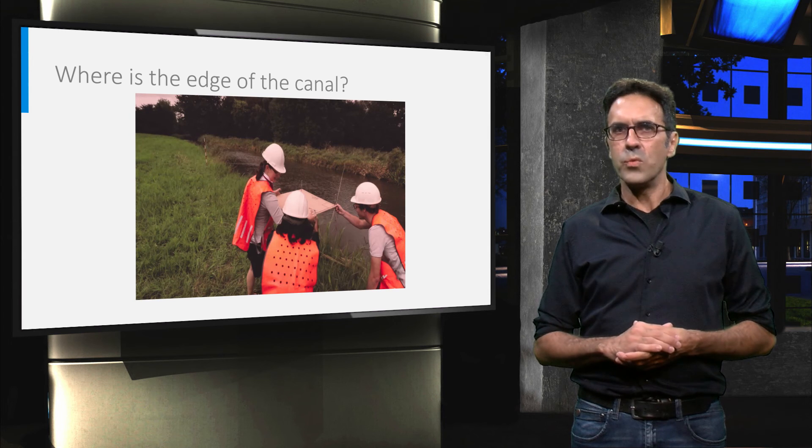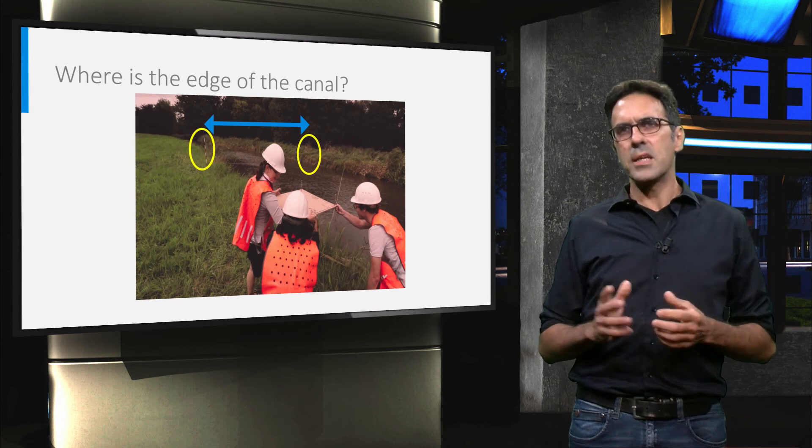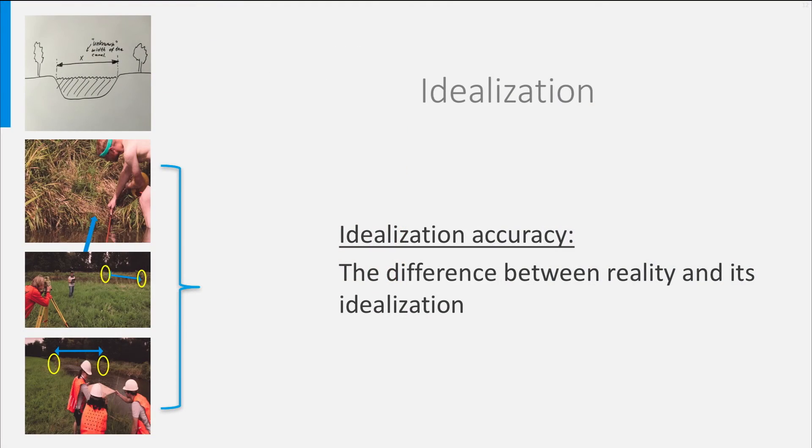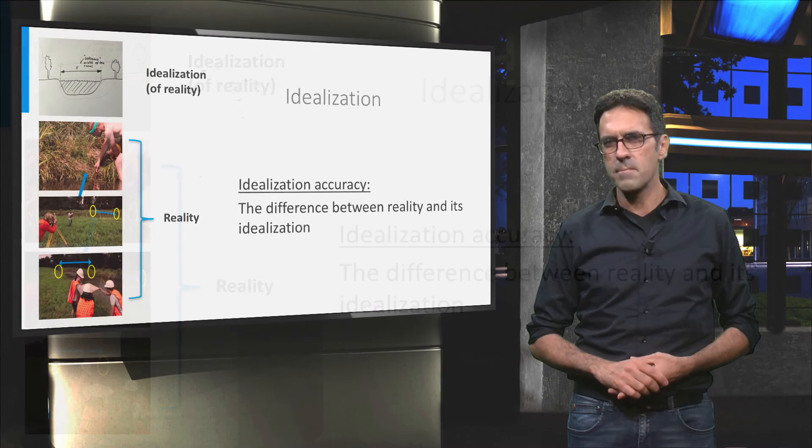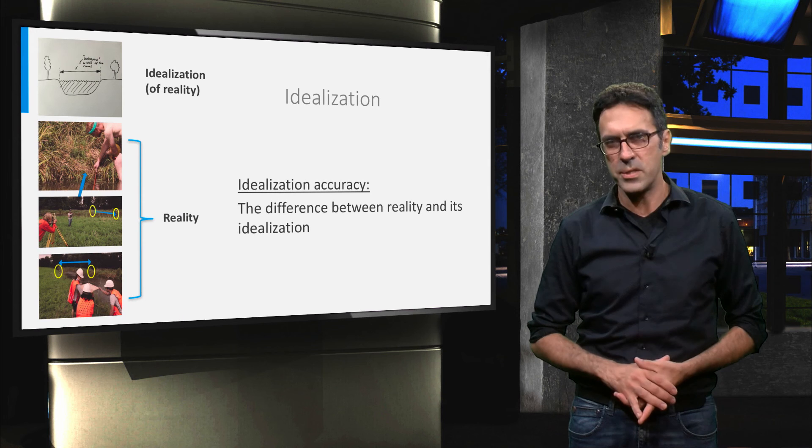The same problem would hold for the team applying the Boy Scout method. It is clear that the rod is not really at the land-water interface. We now know that real life measurements will differ from the idealized mathematical model. Once we have linked the mathematical model to the real world, this difference usually cannot be noticed anymore. We refer to this difference as the idealization accuracy.